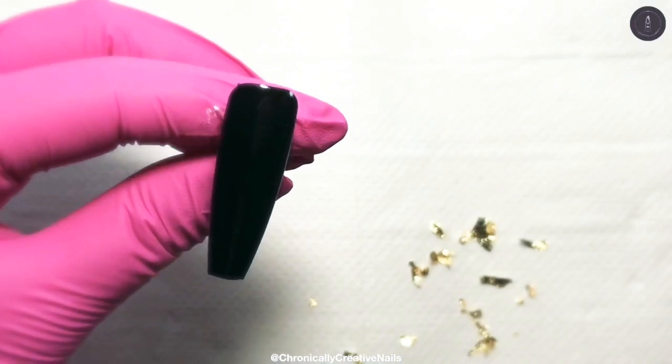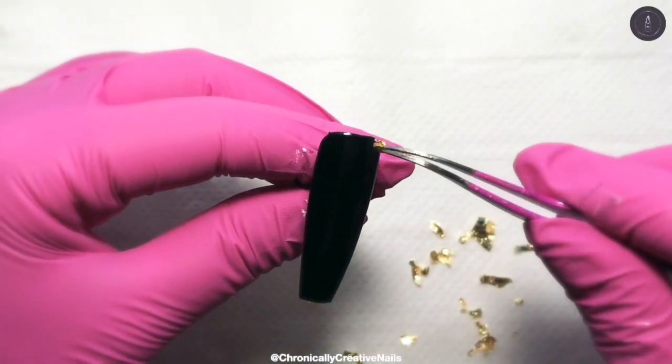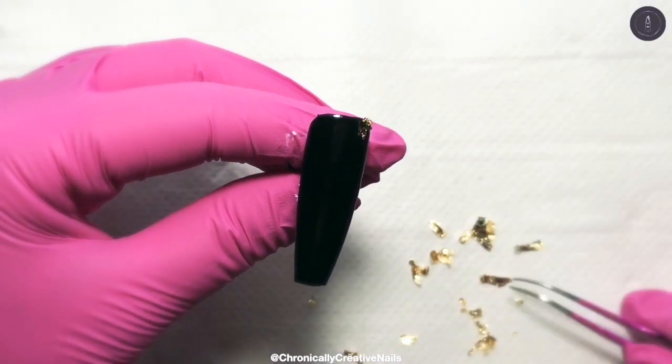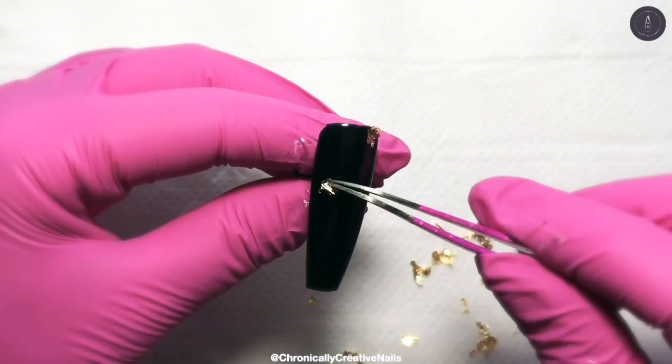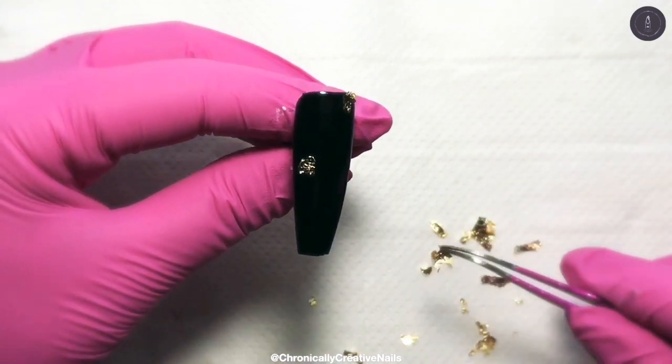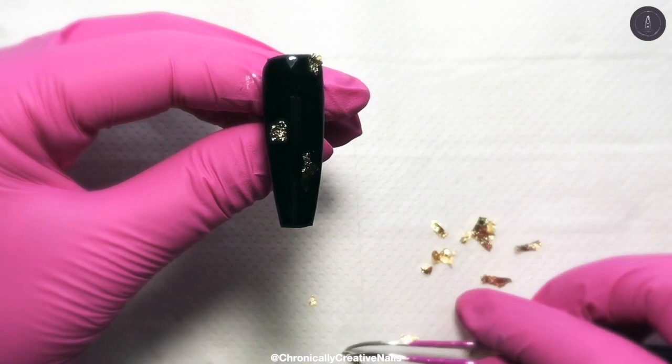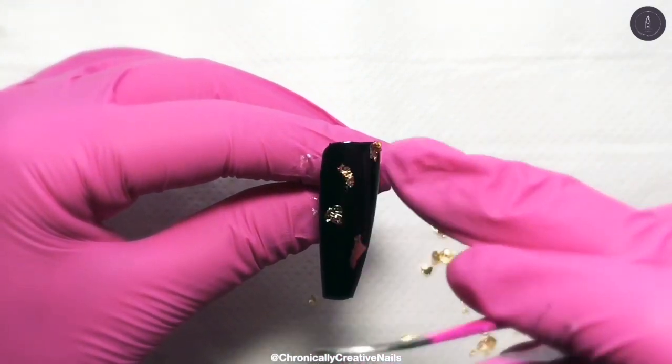I'm going to cure that in the lamp and then I'm going to take pieces of my gold leaf that I've just ripped up and place them on just randomly on the nail. Just pressing that in to flatten it.